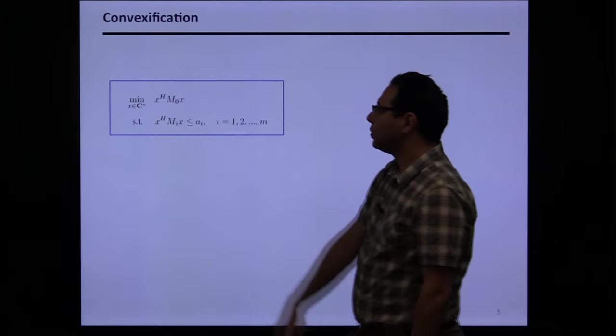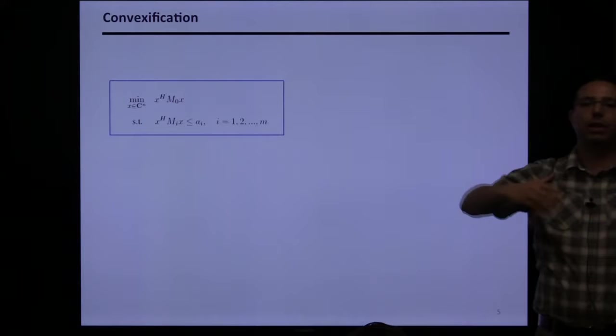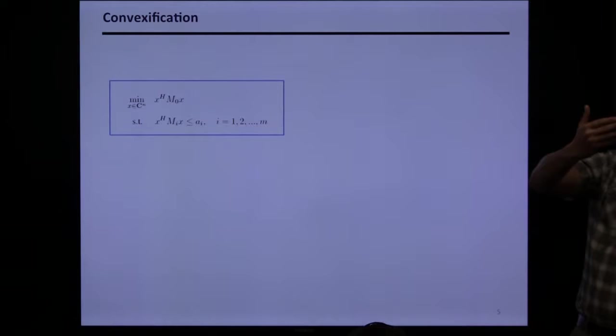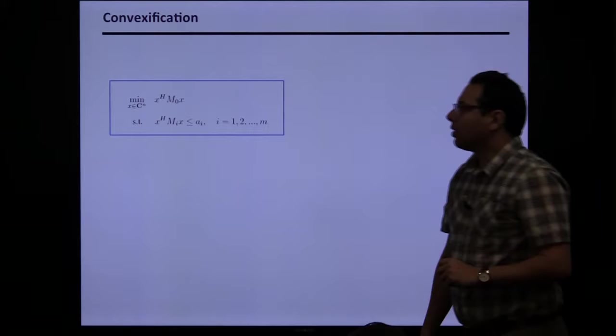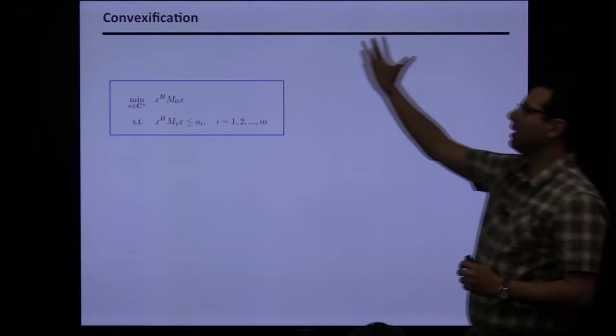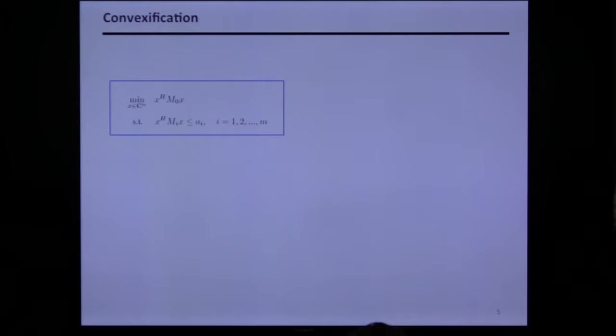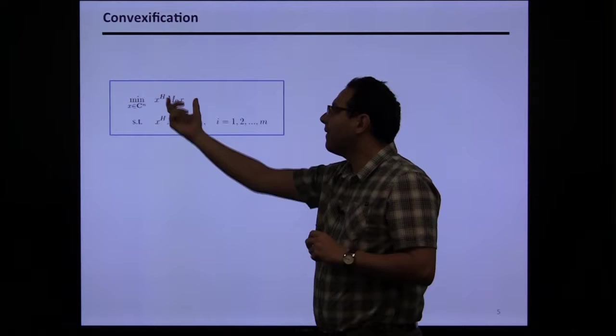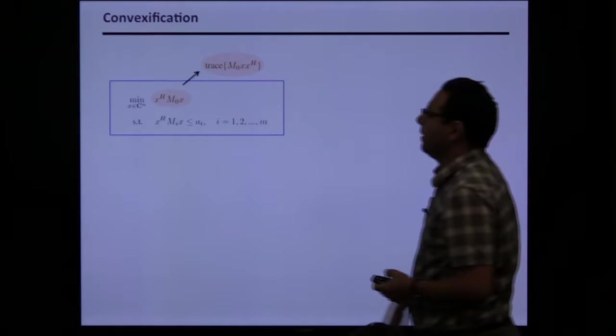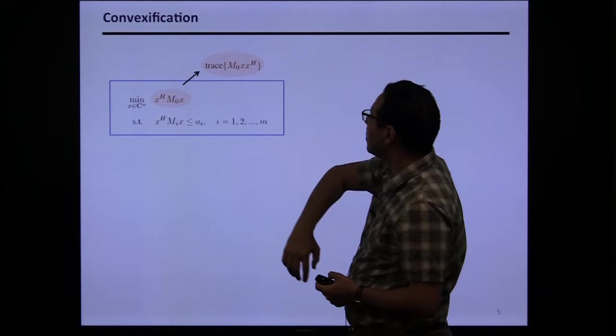Most of these problems can be written as a quadratically constrained quadratic optimization: a quadratic objective with a bunch of quadratic constraints. It turns out that every polynomial optimization can be written this way — if I have x to the 4, I write it as (x²)², define x² as a new variable y, and break down all the exponents to make everything quadratic.